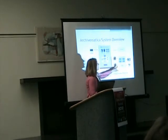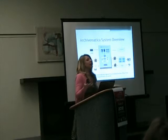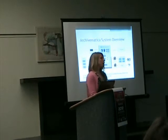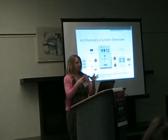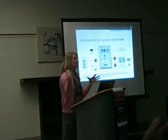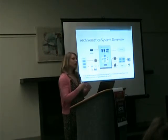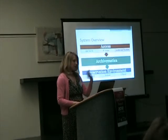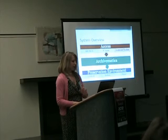Then, on top of that, you'll have an access system — that's your card catalog. That could be ICA Atom, it could be Archon, it could be Archivist's Toolkit. So these are all ways that you can have one big system that incorporates a lot of open source tools in processing, but also allows open source tools for the backend storage and open source tools for the access on top.